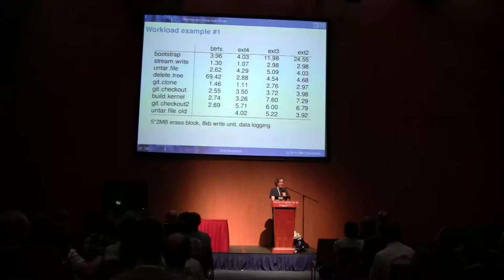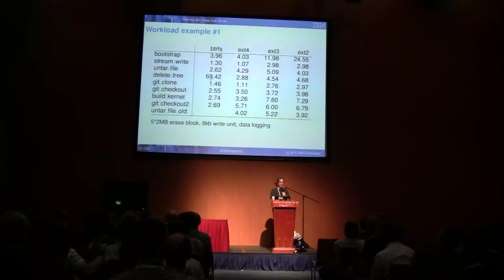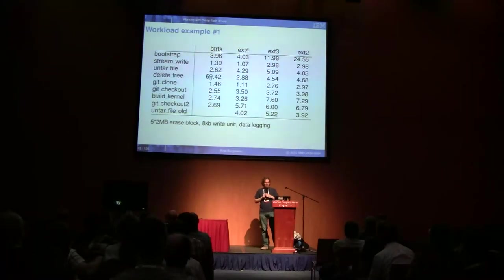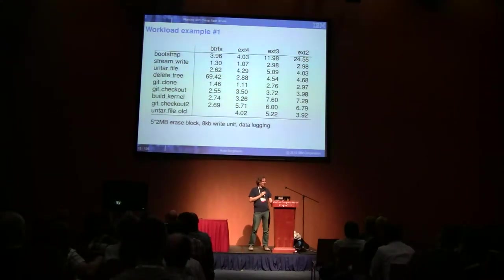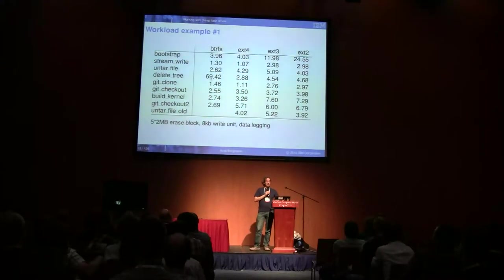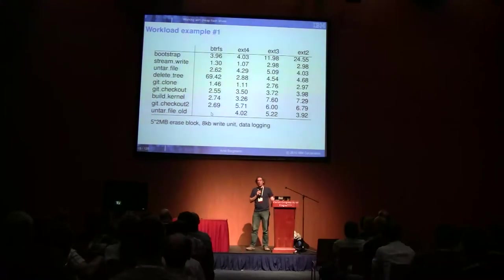Btrfs in a lot of cases is significantly better. For the untar case, if you untar a file of 100 megabytes on ext4, the write amplification factor means the card would internally write 429 megabytes, while Btrfs on the same card would write only 262 megabytes — which takes less time and causes less aging on the card, since each block can only be written a certain number of times before it's dead. There's one case — deleting files — which is really bad for Btrfs, and apparently they're working on that. Btrfs also takes a lot more space.